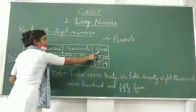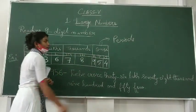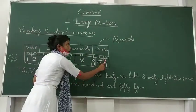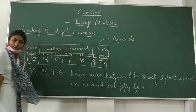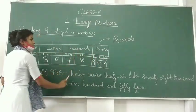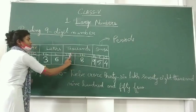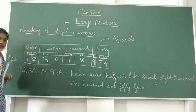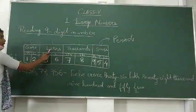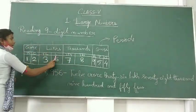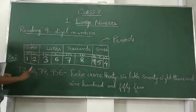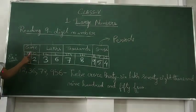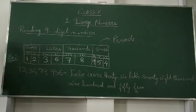In the ones period, the place values are: ones, tens, hundreds. In the thousands period: thousand, ten thousand. In the lakhs period: lakhs, ten lakh. And in the crore period: crore, ten crore.